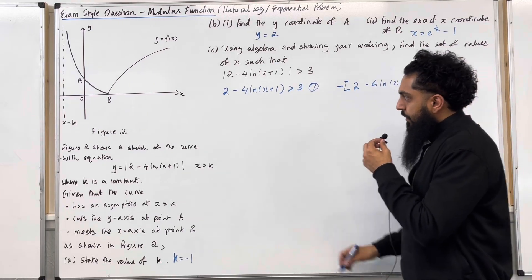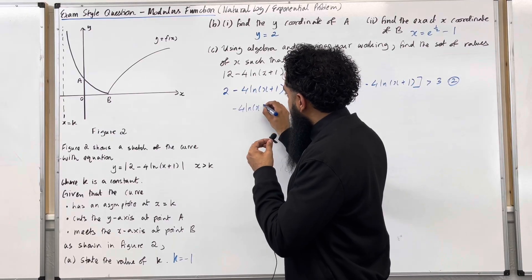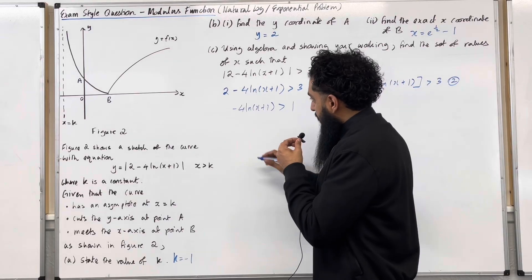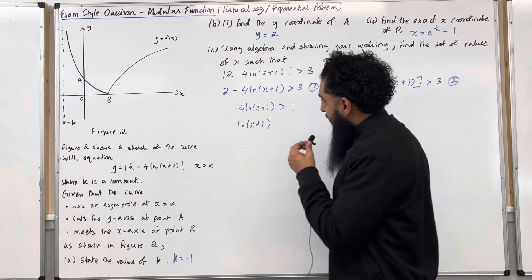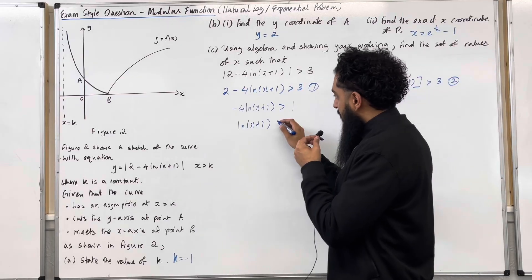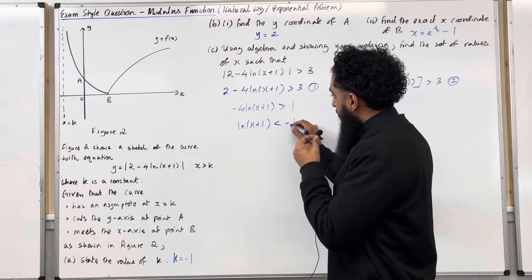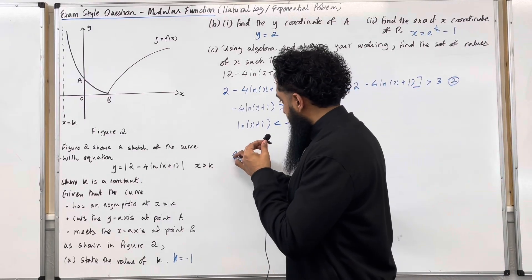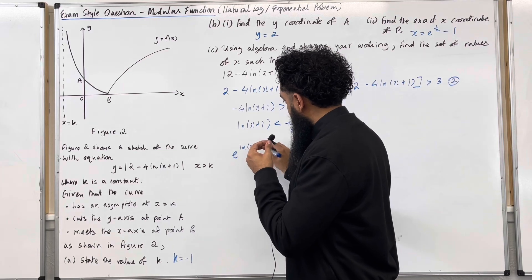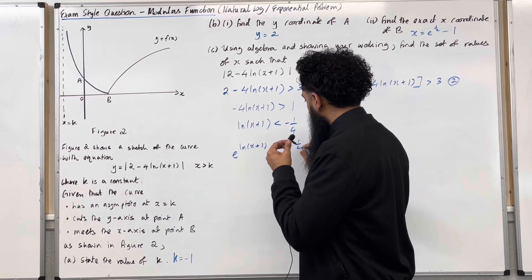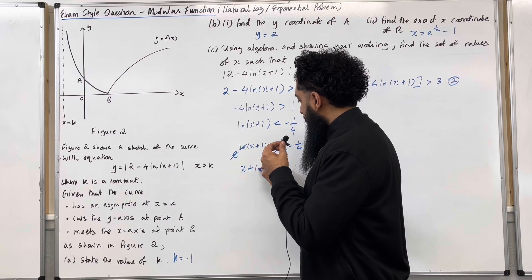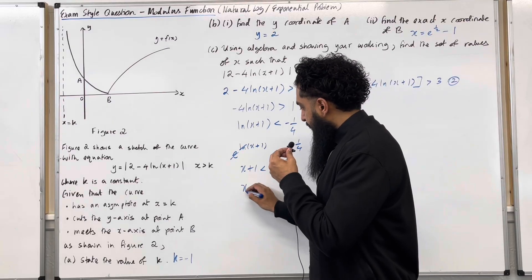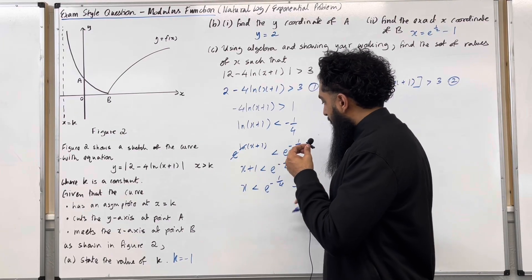Starting with inequality number 1: minus 4 ln(x plus 1) is greater than 1. Dividing by negative 4 flips the inequality, giving ln(x plus 1) less than minus one quarter. Applying e to both sides — e and ln cancel — then taking 1 to the right-hand side gives the solution for the first inequality.